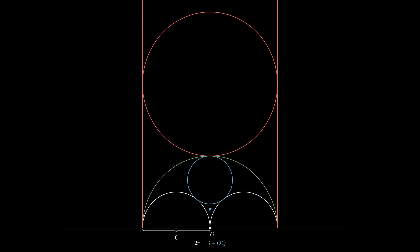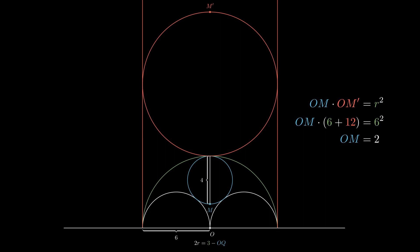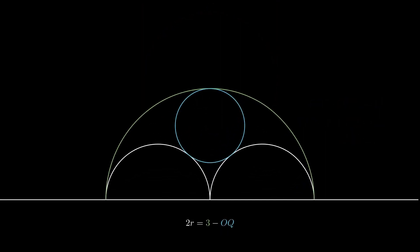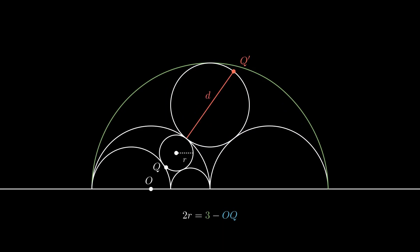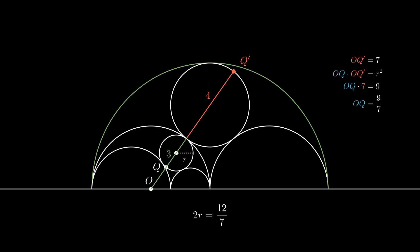Again, the circle we're interested in is nestled between all three other circles, and this must stay the same in the inverted space. We invert this point M to M dash, noting that M dash is one and a half circle diameters away from the origin. Reusing the formula of inversion now with R equals six gives us that M is two away from the origin. Six minus two is four, so the diameter of the circle is four. Zooming back into the original problem will show us that because D is four, Q dash is a distance of seven away from the origin. Using the formula of inversion one last time tells us that the distance to the point Q is therefore nine divided by seven. Plugging this into our formula for the radius gives us two R equals twelve over seven, or R equals six over seven — exactly what we saw before.